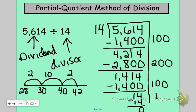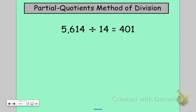Now, in order to find out what my answer is here, I'm going to take all of these numbers here on the right and add them all together. So 100 plus 200 plus 100 plus 1. 100 and 100 is 200. 200 plus 200 is 400. So I should get 401. So my answer for 5,614 divided by 14 is 401. Hopefully that was helpful to show you how to use partial quotients.